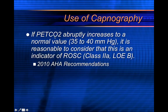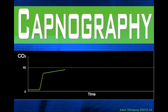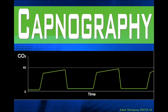If PETCO2 — remember, that's the same as end tidal CO2 — is abruptly increased to a normal value, it is reasonable to consider that this is an indicator of return of spontaneous circulation. That's a class 2A recommendation from the AHA, the American Heart Association. It will increase to greater than normal values — I've seen it up to 90, an end tidal CO2 of 90 on somebody that regained a pulse during or following cardiac arrest. So that's it for part one. We're going to get into capnography values more in part two and really talk about the use of the device.